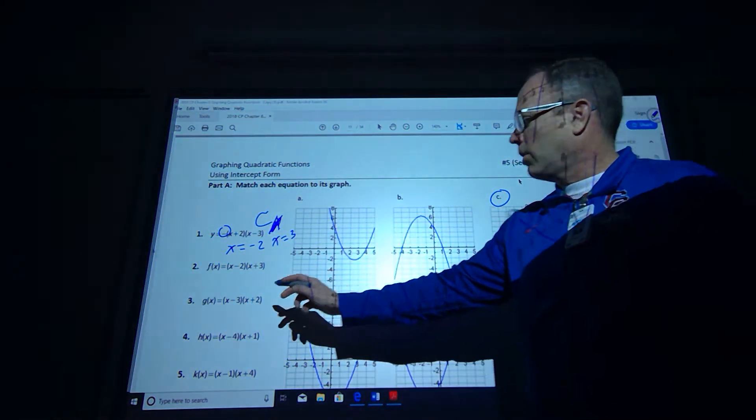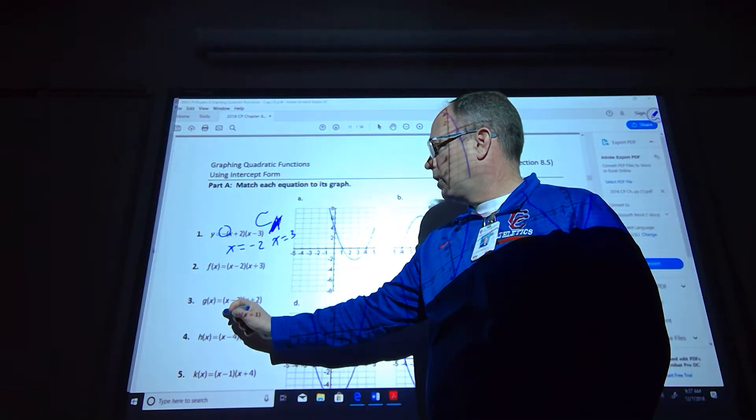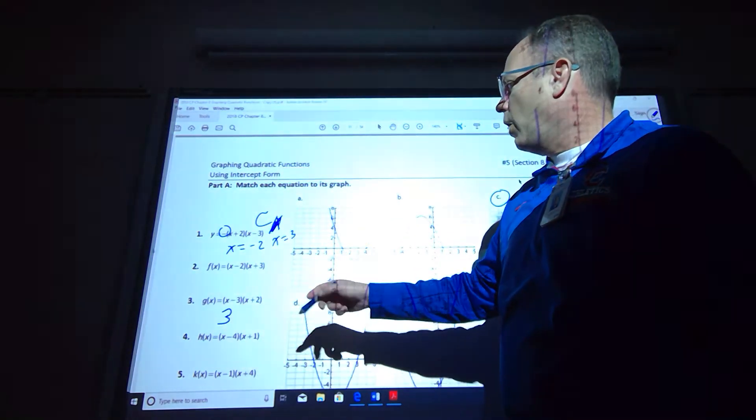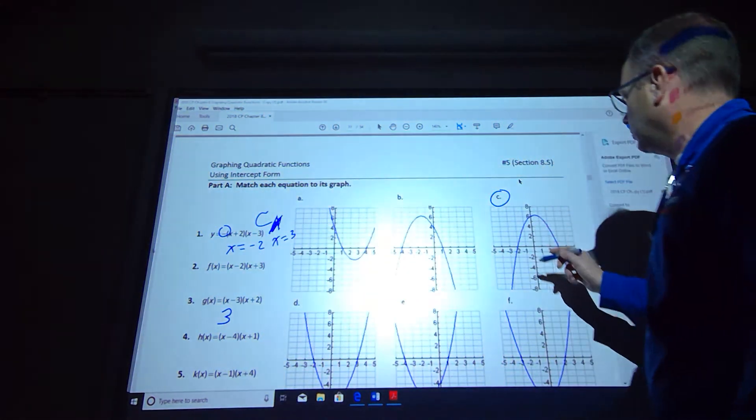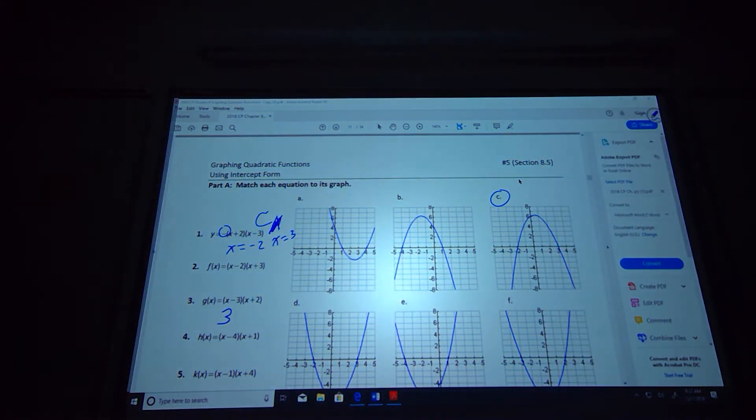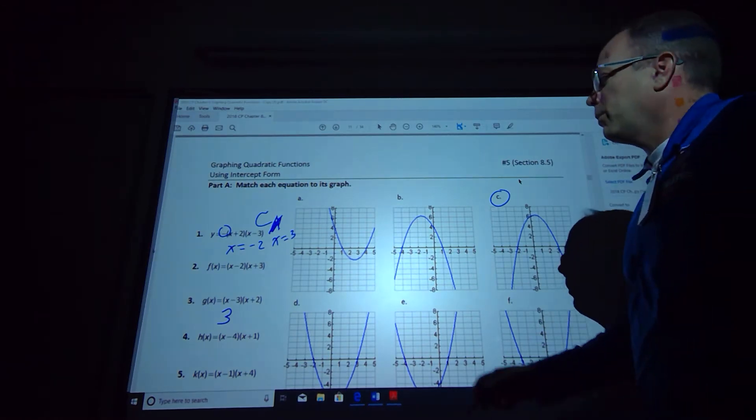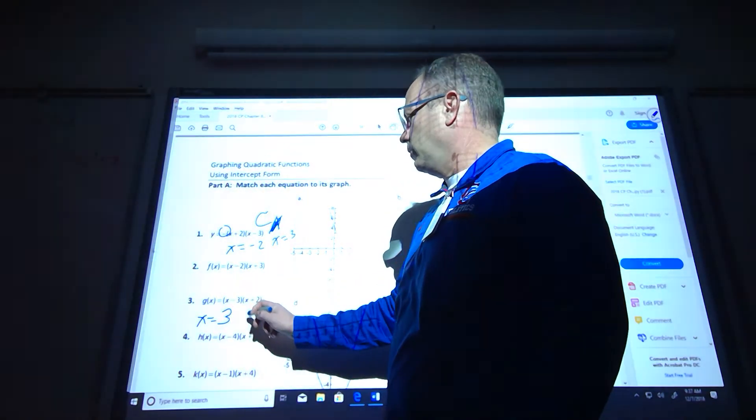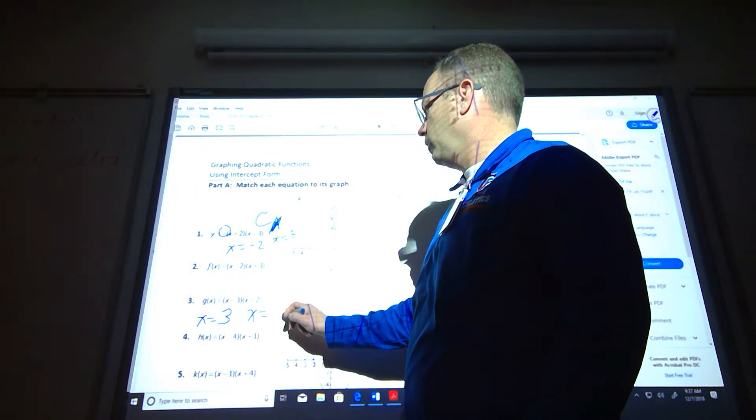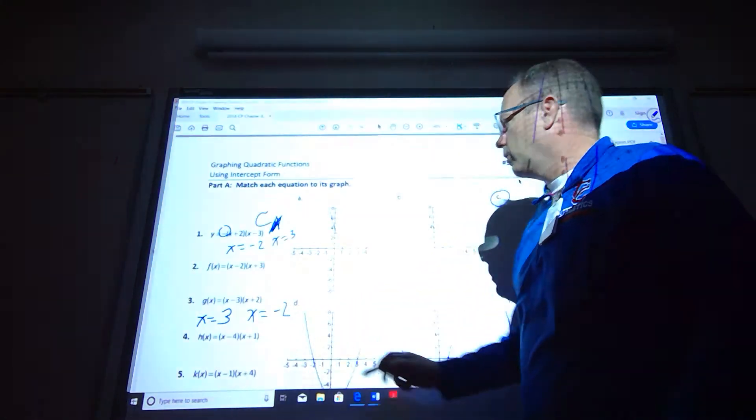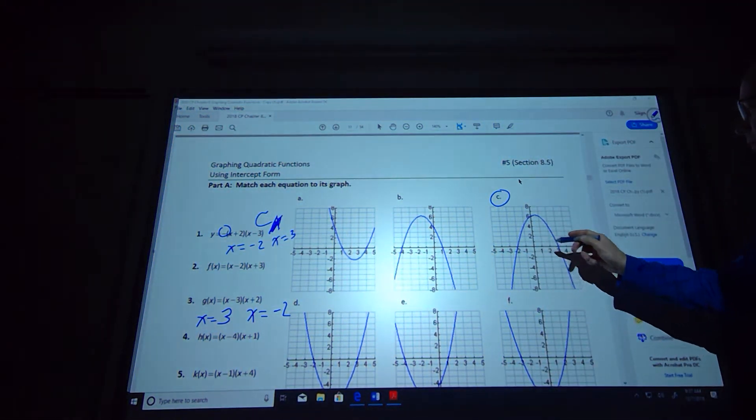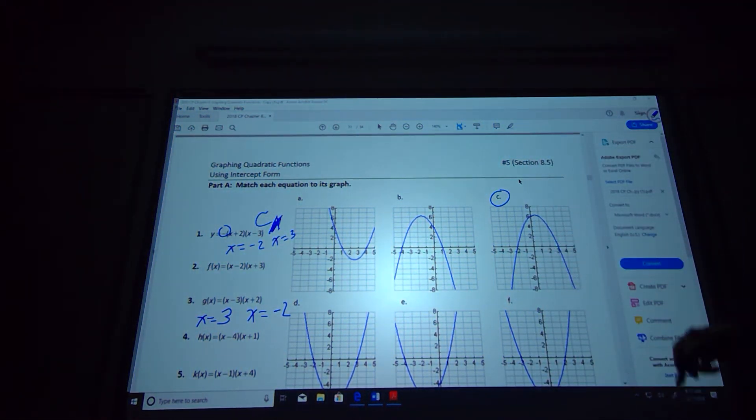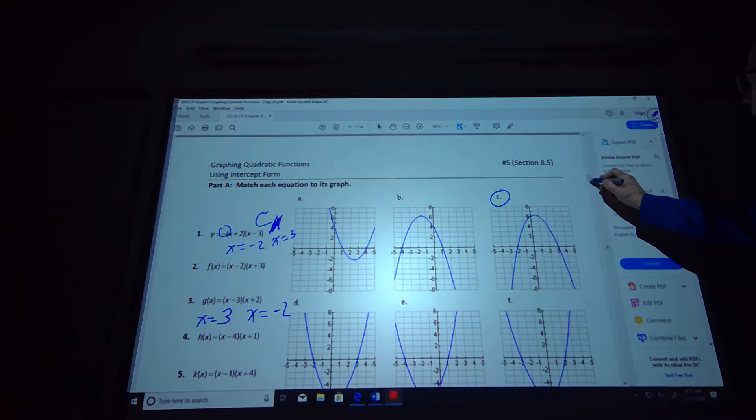Number 3 looks like it crosses the x-axis at 3. Oh, I take that back, we might be wrong on this one. It looks like a lot of them are going to cross there. This one opens upward, same idea as the last one. So I get x equals 3 because you set those equal to 0, and x equals negative 2. So we're looking for 3 and negative 2, which is the same as this one, but we're looking for the one that opens upward. Let's come down a little bit.